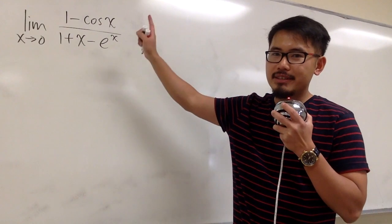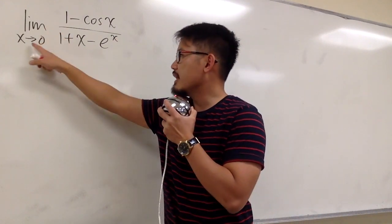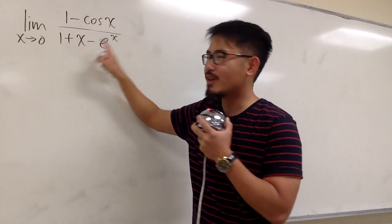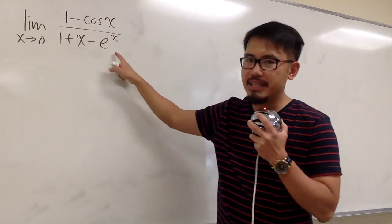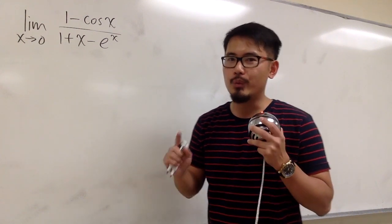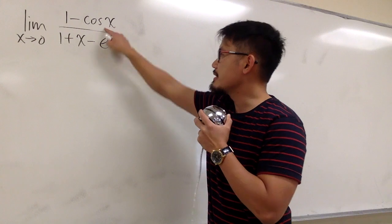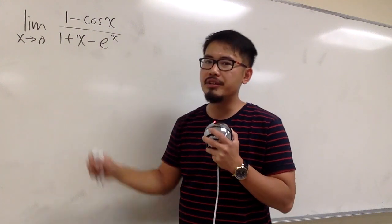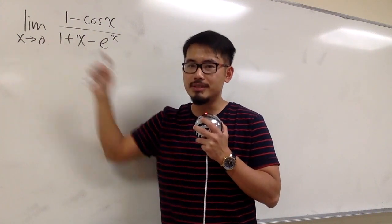We are going to use power series to complete this limit. We have the limit as x goes to zero of 1 minus cosine x over 1 plus x minus e to the x. We are not going to use L'Hopital's rule. We will use the power series expansion for cosine x and e to the x, centered at zero because x is approaching zero.